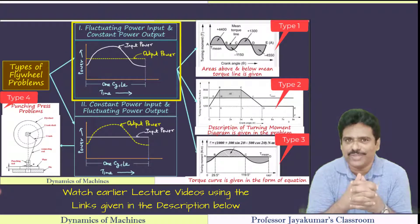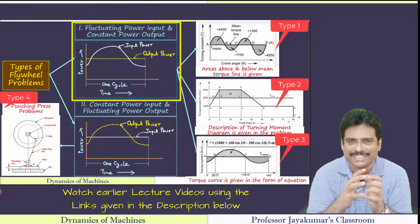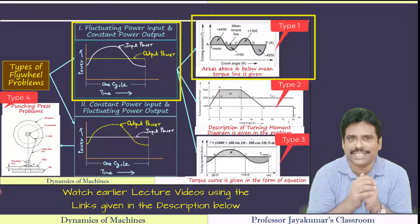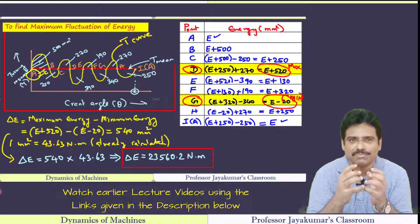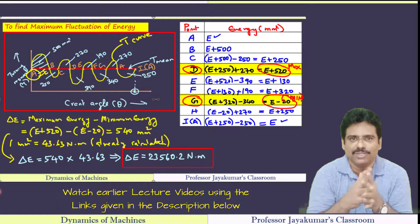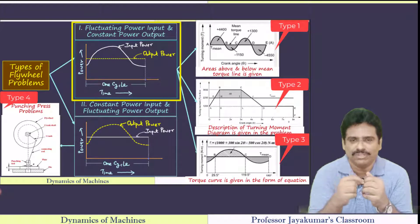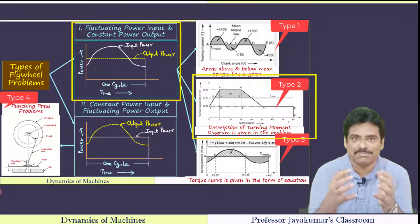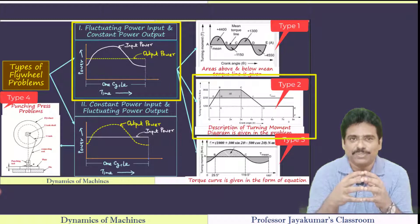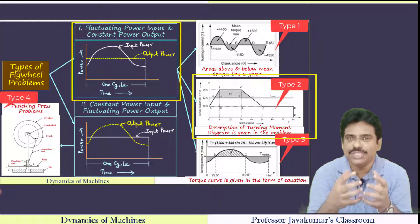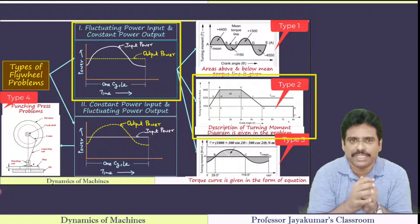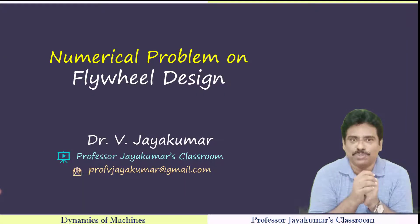In the previous video, we have solved two numerical problems on flywheel design, which I called Type 1 problems. Type 1 problems are those in which the turning moment diagrams are directly given in terms of areas above and below the mean torque line. We are going to solve a numerical problem which I call a Type 2 problem, wherein the turning moment diagram description will be given and using it we must determine all the required data. Are you ready to solve Type 2 problems? Let's get started.